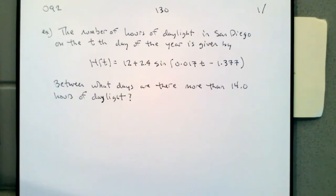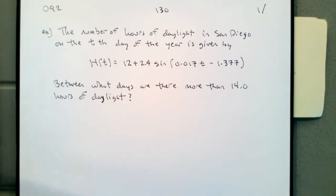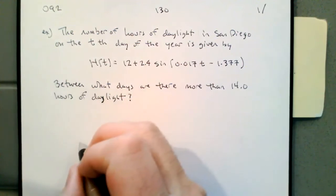Before we do that, let's look at what this function is trying to represent and what these numbers mean in context. Based on what we normally have, we've got 12 plus 2.4 — that's the vertical stuff. The 12 is the constant, so that's going to be where the middle of our graph is.